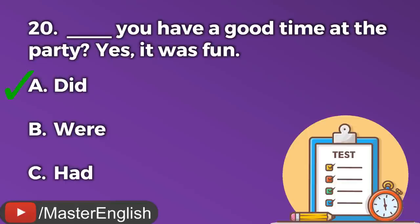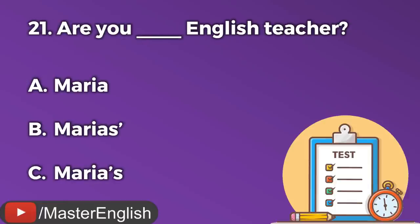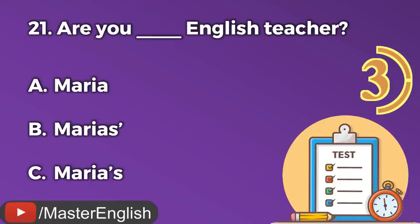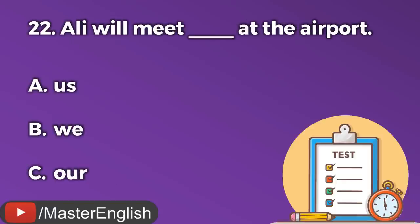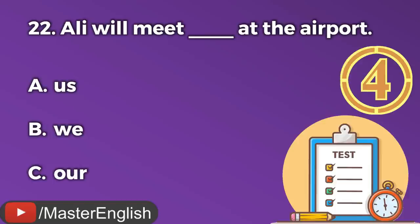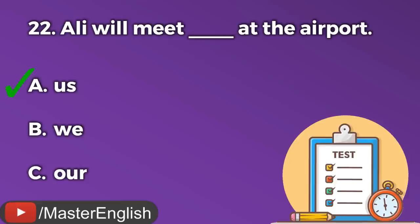Question number twenty-one. Are you ___ English teacher? A: Maria. B: Maria's. C: Maria's. The correct answer is C: Maria's. Are you Maria's English teacher? Question number twenty-two. Ali will meet ___ at the airport. A: Us. B: We. C: Our. The correct answer is A: Us. Ali will meet us at the airport.